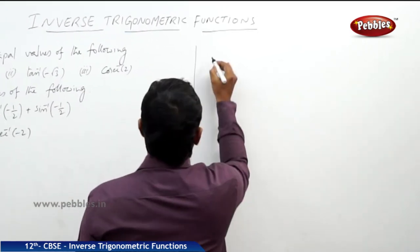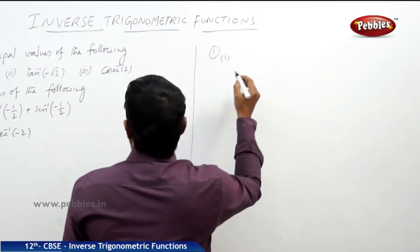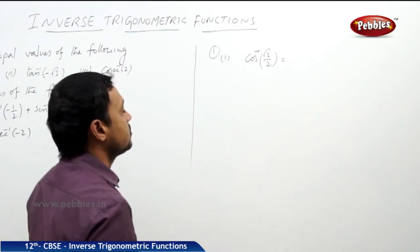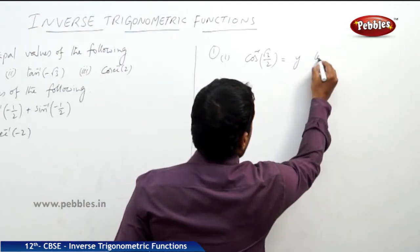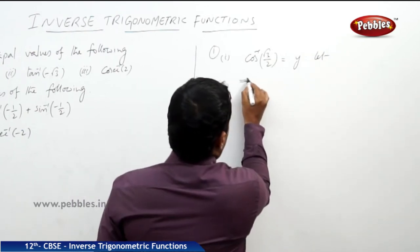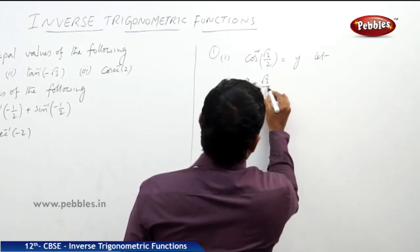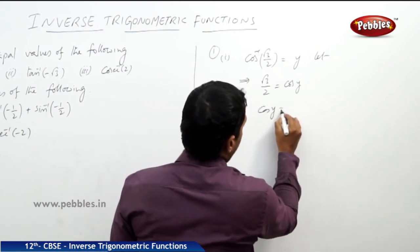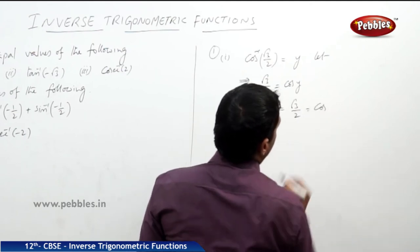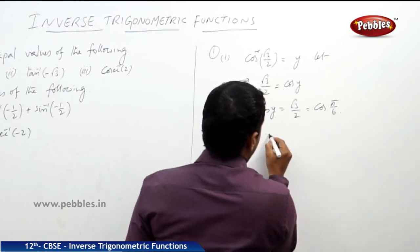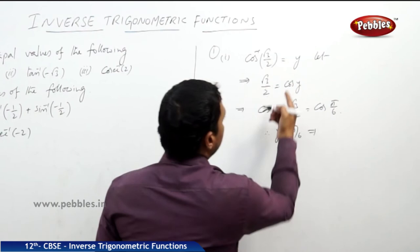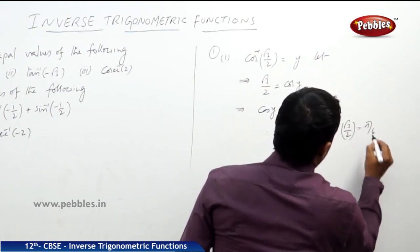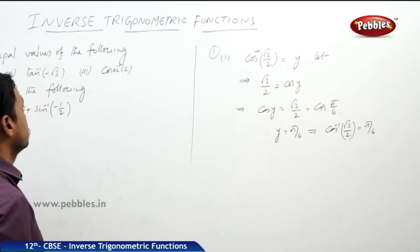First: cos inverse of root 3 by 2. We want to find the principal value, so let it be y. By the definition of the inverse function, root 3 by 2 equals cos y. Therefore cos y equals root 3 by 2. We know that root 3 by 2 equals cos pi by 6. Therefore y equals pi by 6. Since y is cos inverse of root 3 by 2, the principal value is pi by 6.